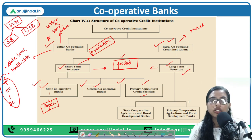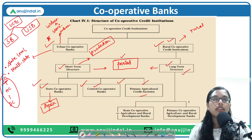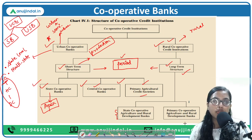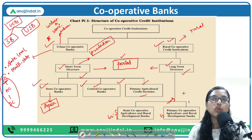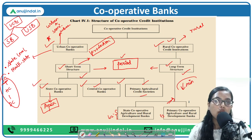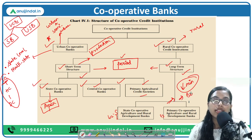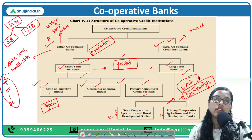Under the long-term structure, we have two classifications: state cooperative agricultural and rural development banks at tier one, and primary cooperative agricultural and rural development banks at tier two. These are more developed compared to the short-term structure. Their own resources are minimal and most resources come from borrowings, similar to how regular banks operate.